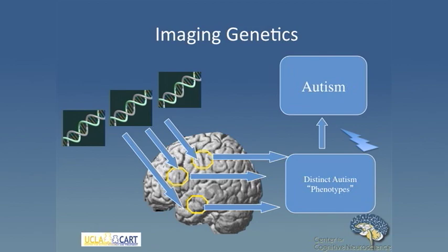The imaging genetics approach thinks of genes as having effects not on disease, but on brain structure and function. Genes will have their first immediate effects on the brain, and different genes may affect different parts of the brain and, in turn, different autism phenotypes. There's no reason to think all autism risk genes affect the same brain systems and lead to the same phenotypes. By looking at multiple genes and their independent effects on the brain, we can look at specific mechanisms — bits and pieces of the autism puzzle.